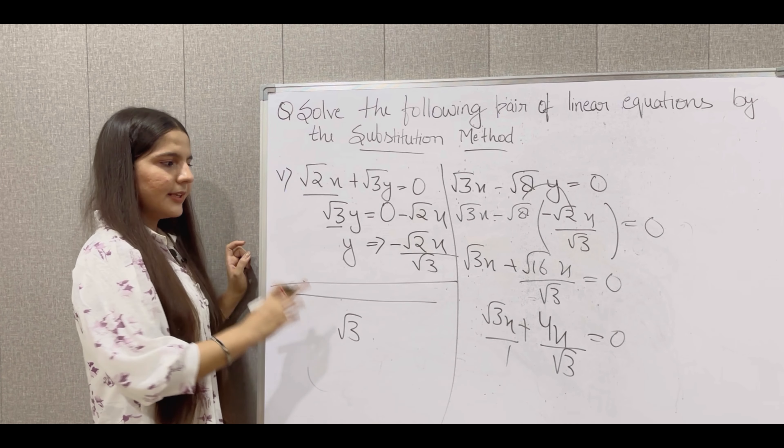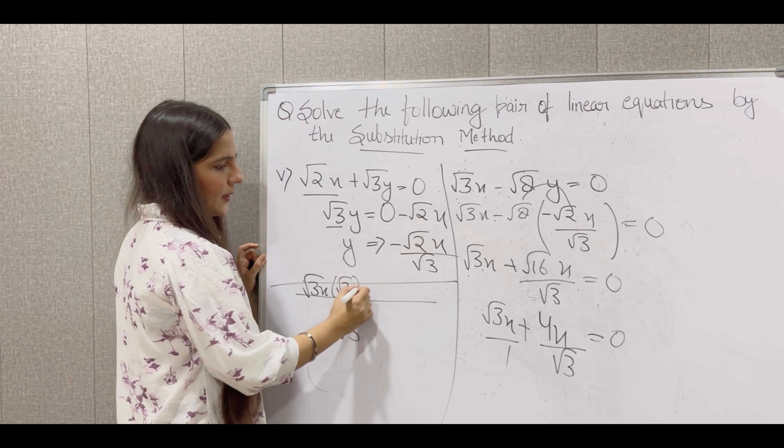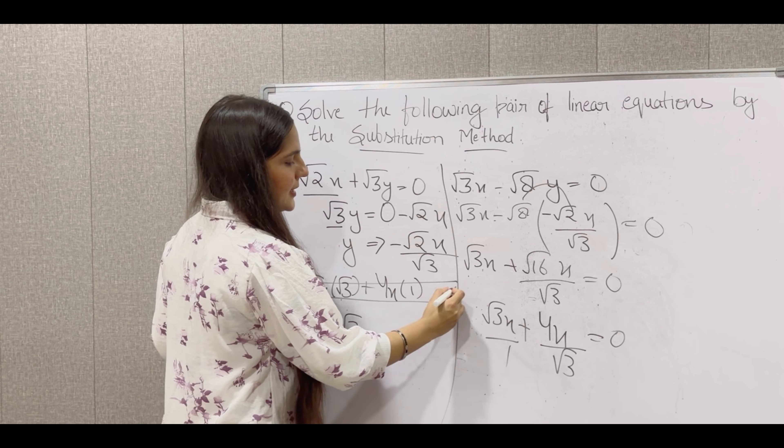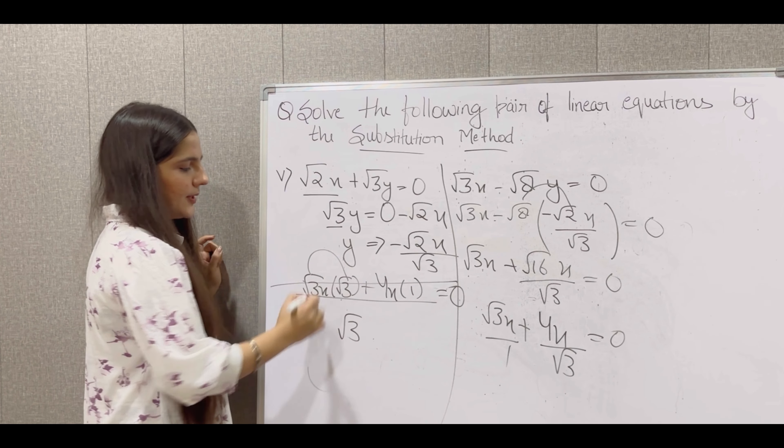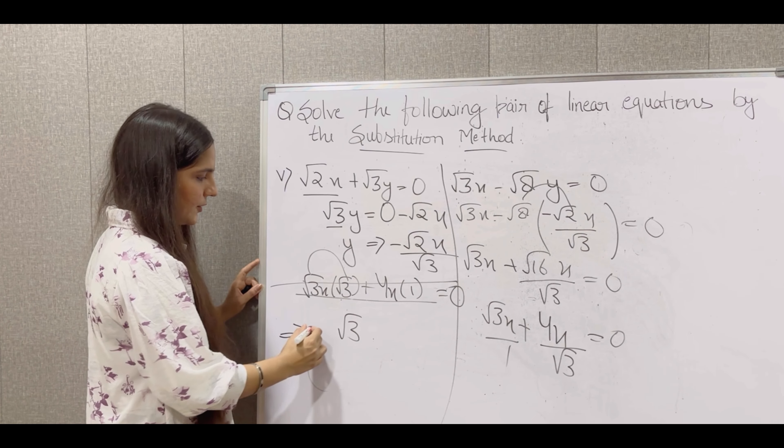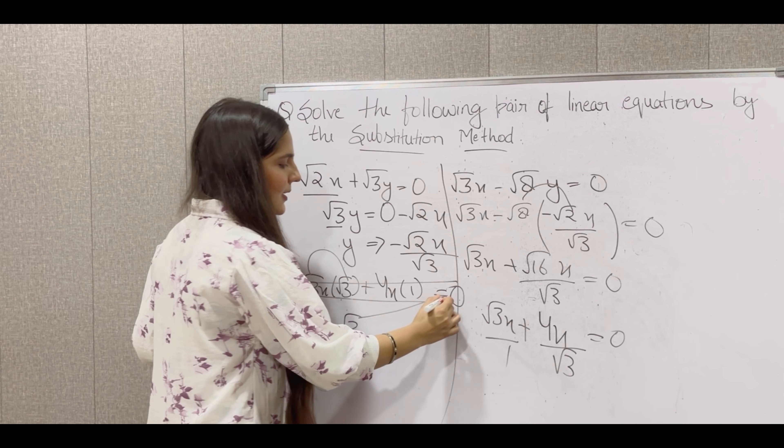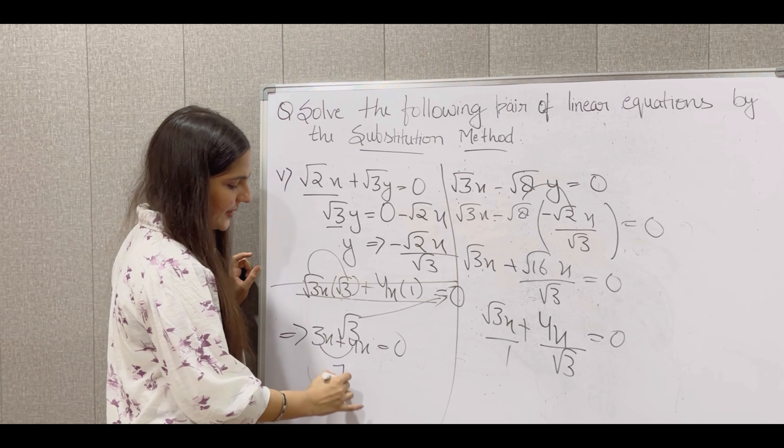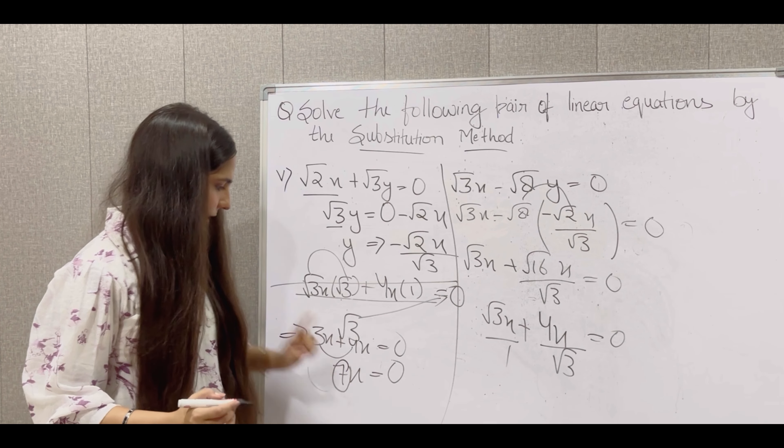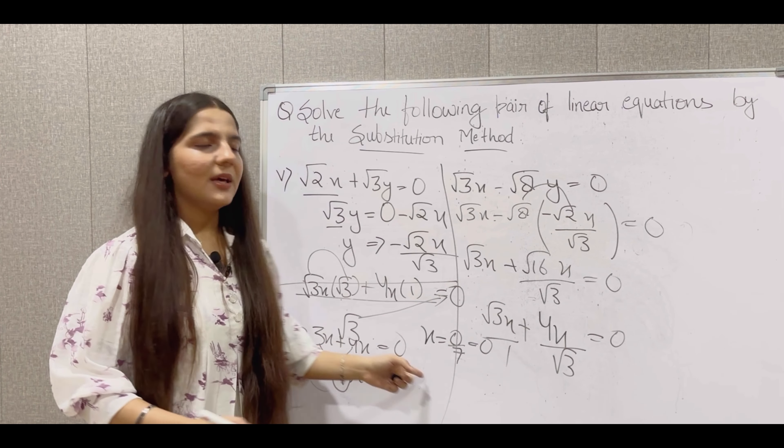So root 3 divided by root 3 is 1. Root 3 multiplied with root 3 x. Plus root 3 divided by root 3 is 1. So 4x multiplied with 1 is equal to 0. Root 3 into root 3, when we multiply same numbers with root, the root goes away and the number remains. So 3x plus 4x is equal to 0. This root 3 will go up, multiply with 0 becomes 0. 4 plus 3 is 7. So 7x is equal to 0. 7 is in multiplication, it will go in division. So x is equal to 0 divided by 7, which gives us 0. So x's value is 0.